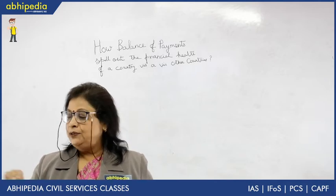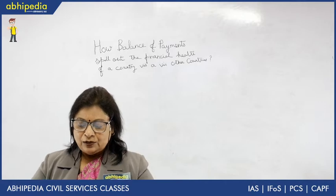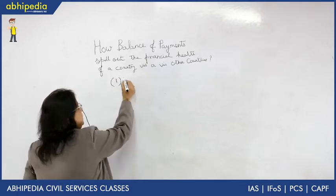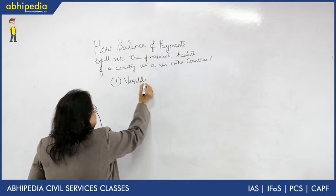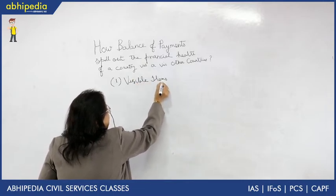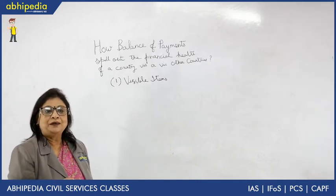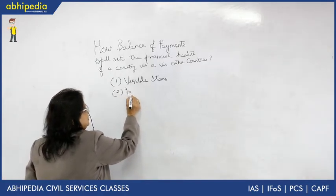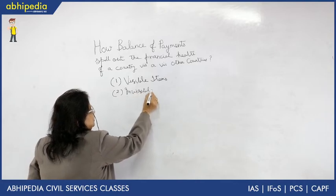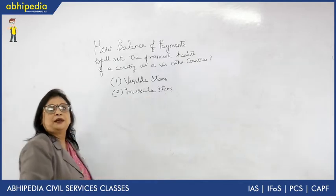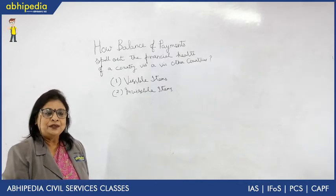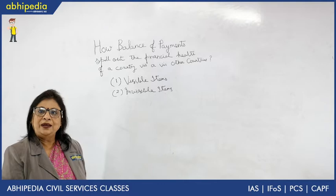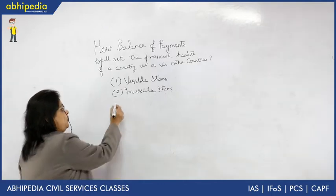Now let's look at the structure of balance of payment. There are three items to be clear about. First, visible items — visible items mean goods, material goods. Second, invisible items — invisible items are services such as services of an expert, transportation companies, insurance companies. Third is capital transfer — it is about inflows of capital and outflows of capital.